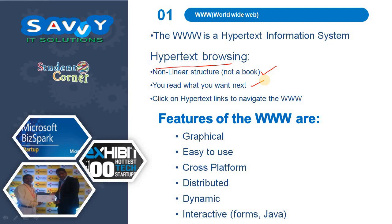The features of WWW are: graphical — meaning user-friendly, easy to use, easily operated with no difficulty in the process. Cross-platform means from one browser to another browser the view is the same. Distributed means information or data is shared from one system to another system very easily. Dynamic — web pages are of two types, static and dynamic, and the content will be changed dynamically.